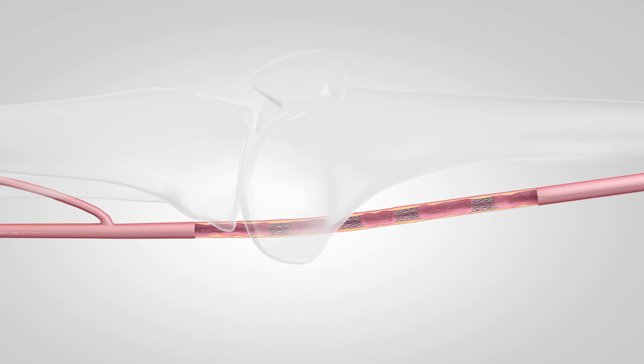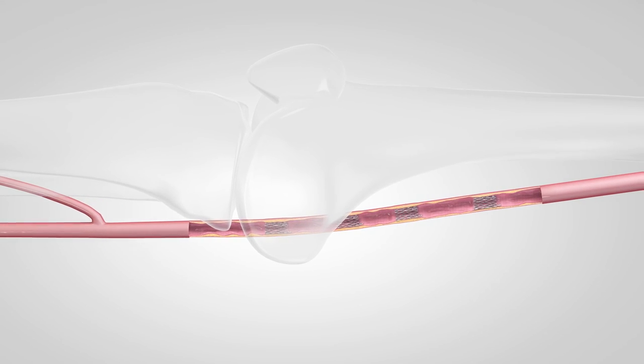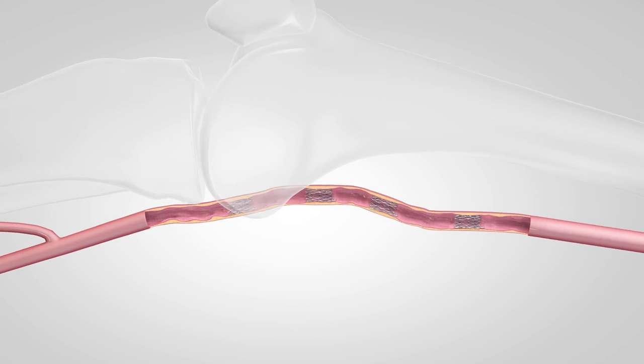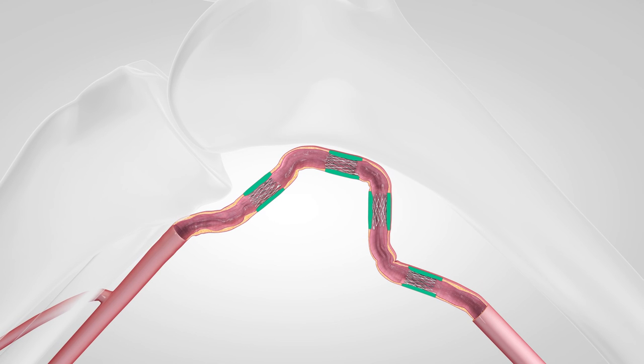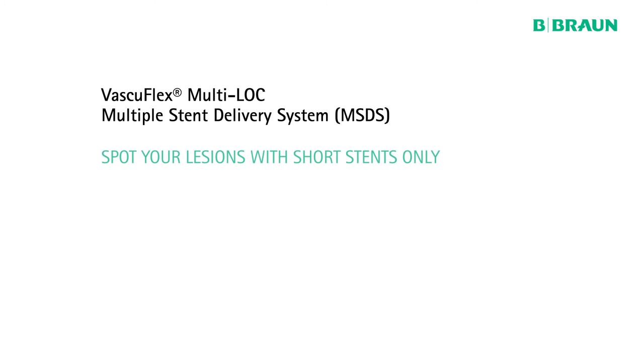VascoFlex Multilock leads to less acute and chronic trauma due to less material in the vessel wall. It helps to maintain natural vessel movement whereas stent fractures can be avoided. VascoFlex Multilock: spot your lesions with short stents only.